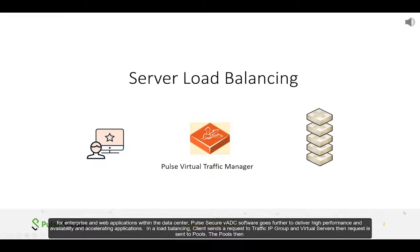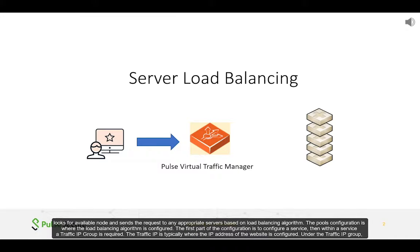In load balancing, a client sends a request to a traffic IP group and virtual servers, which then sends it to the Pulse. The Pulse looks for an available node and sends the request to an appropriate server based on load balancing algorithms.